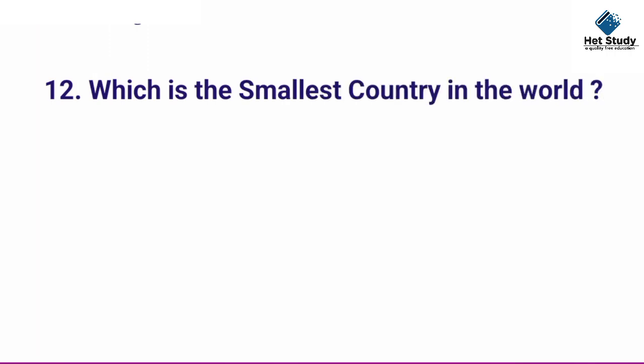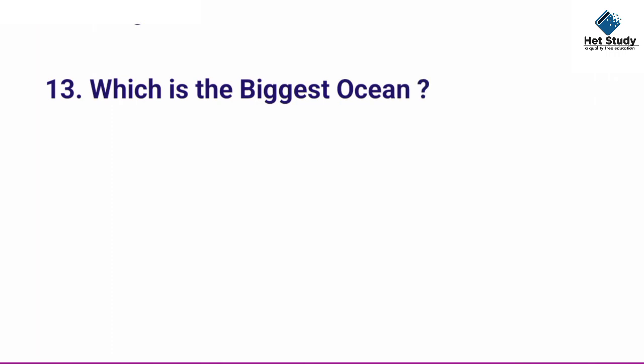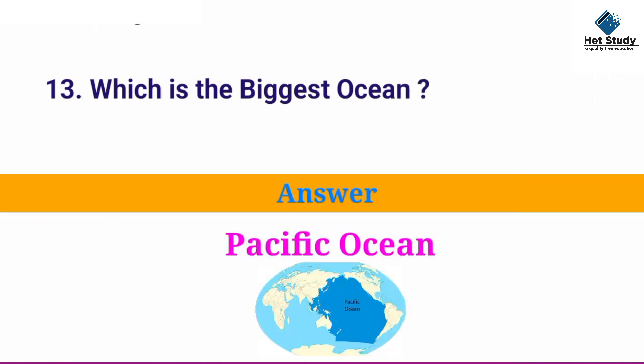Which is the smallest country in the world? Answer: Vatican City. Which is the biggest ocean? Answer: Pacific Ocean.